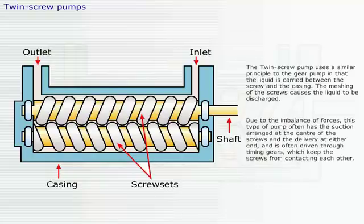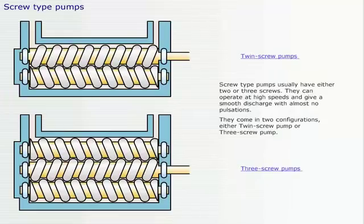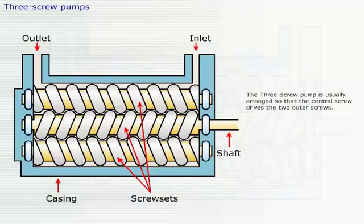Due to the imbalance of forces, this type of pump often has the suction arranged at the center of the screws and the delivery at either end, and is often driven through timing gears, which keep the screws from contacting each other. The three screw pump is usually arranged so that the central screw drives the two outer screws.